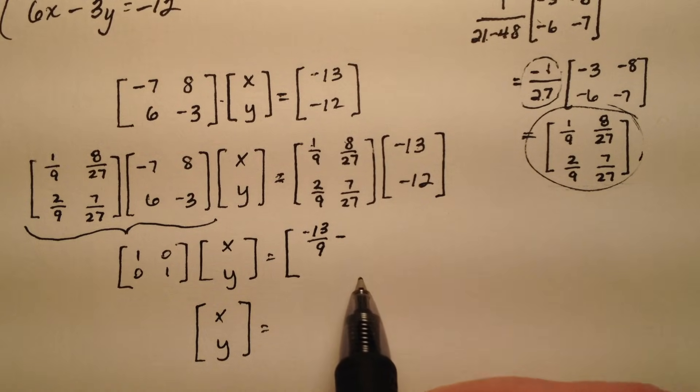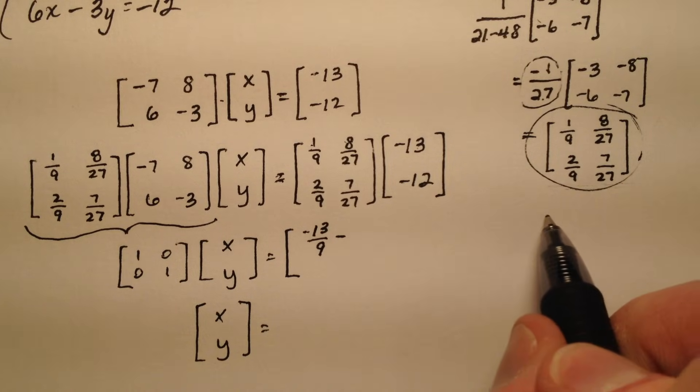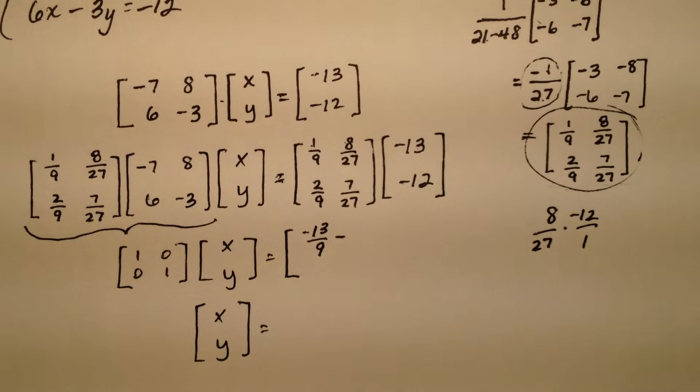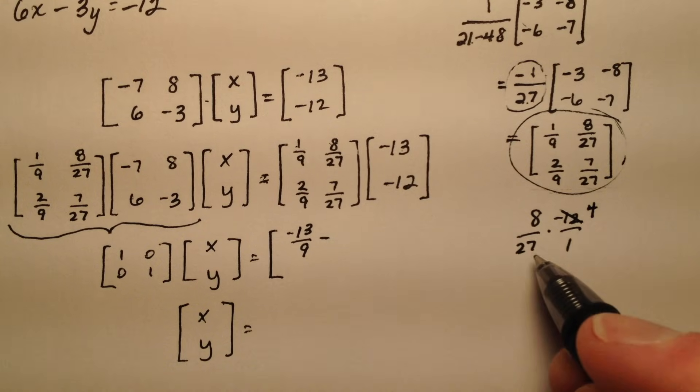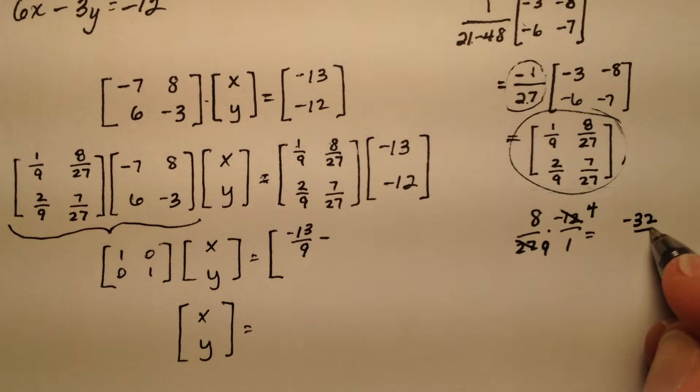This will end up being negative so I'm going to say subtraction. So 8 27ths times negative 12 over 1. So I can take a 3 out of each of these and this will be negative 4 and 9. So this will be negative 32 9ths.